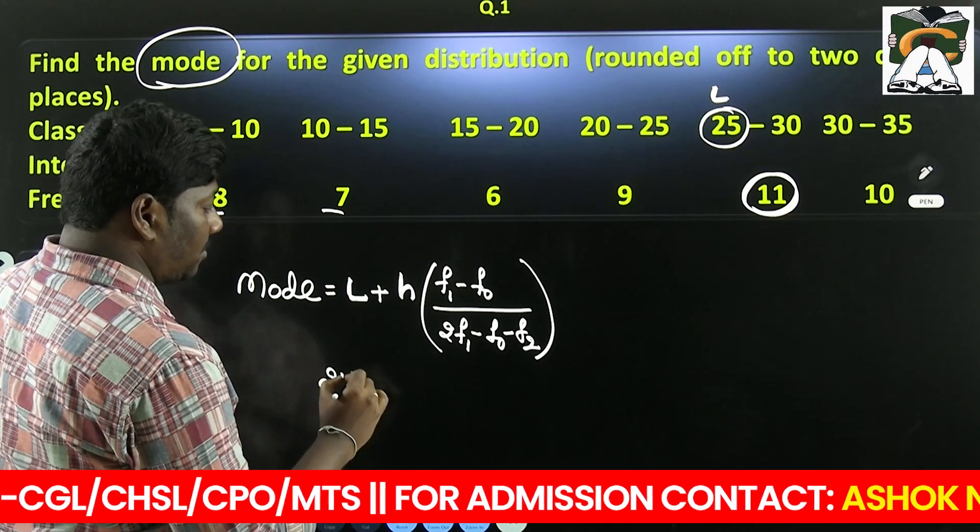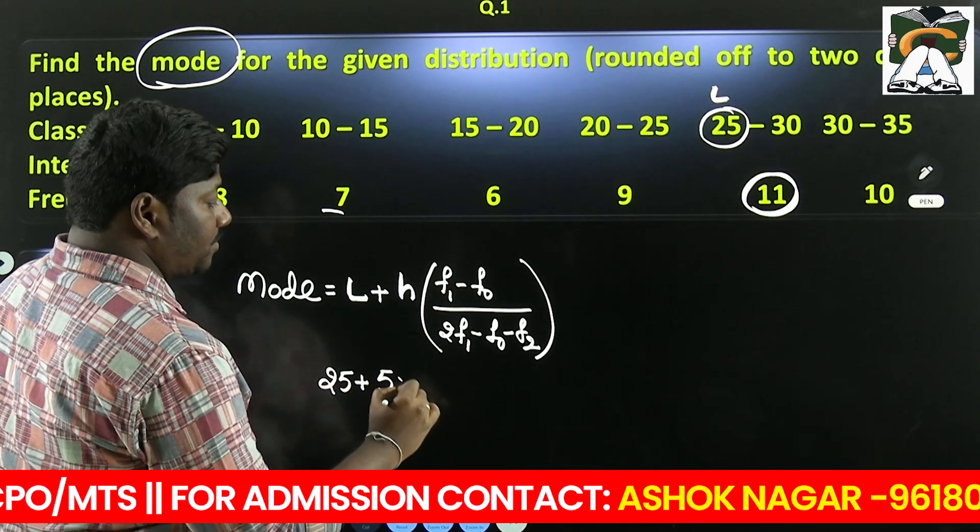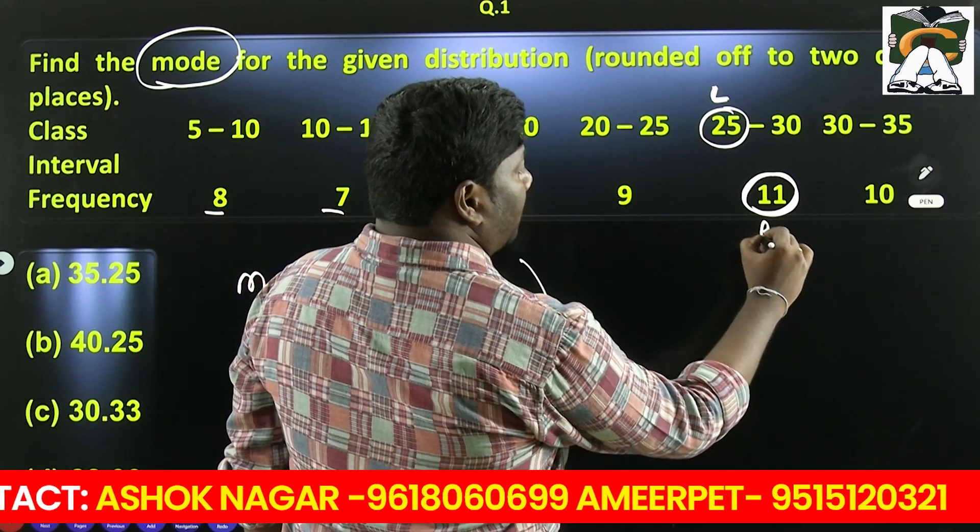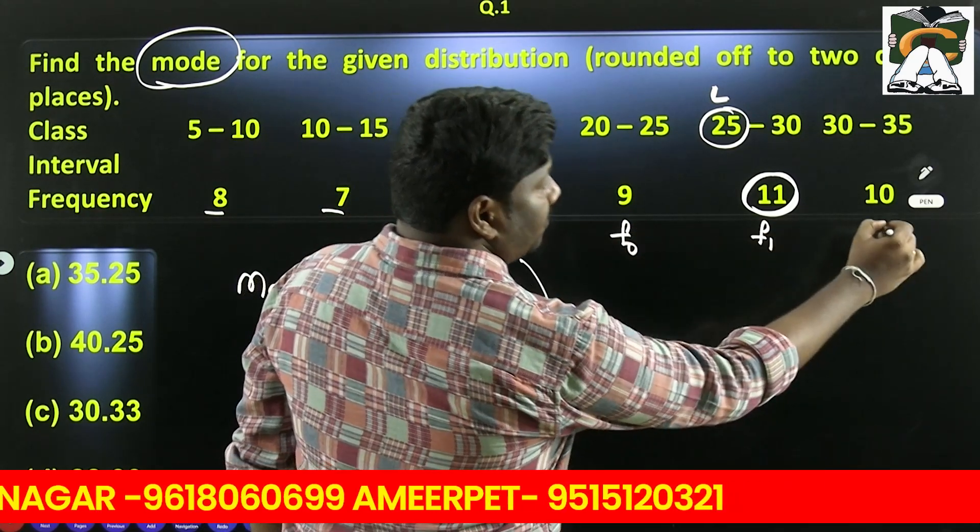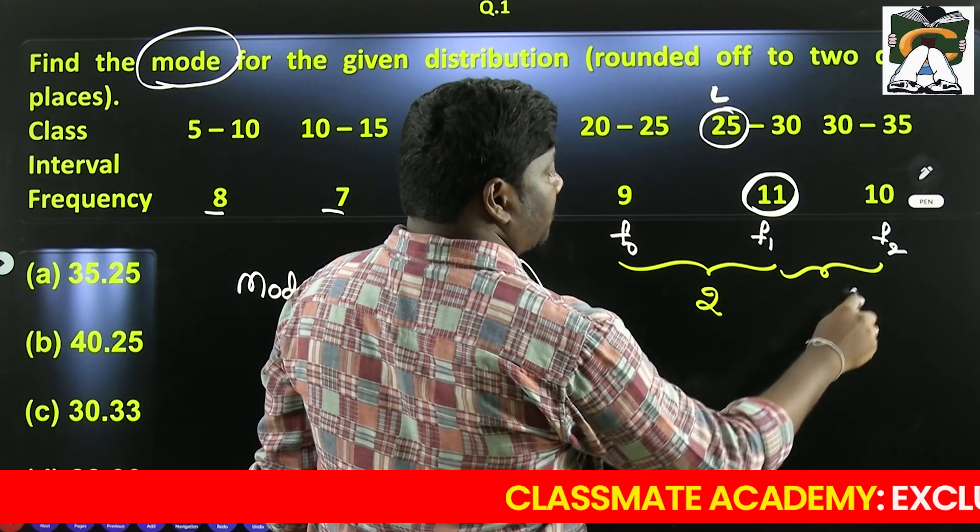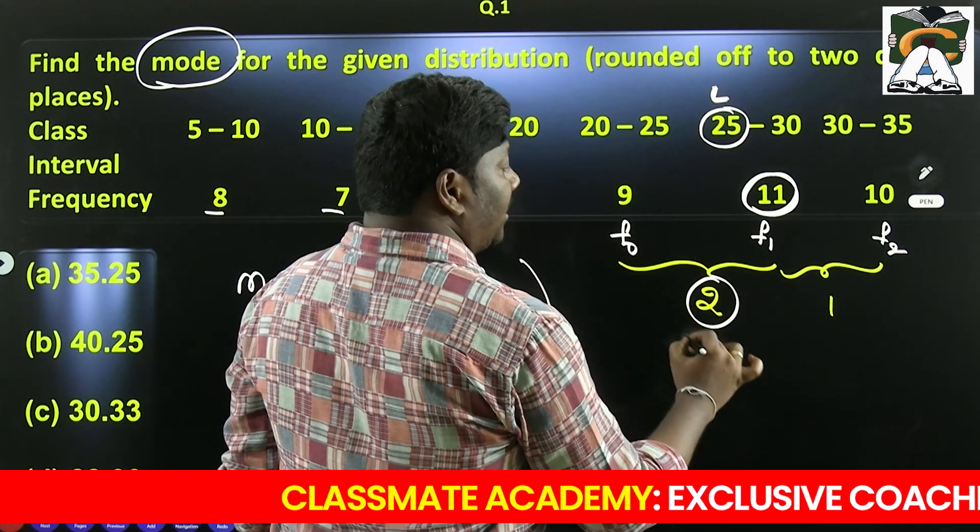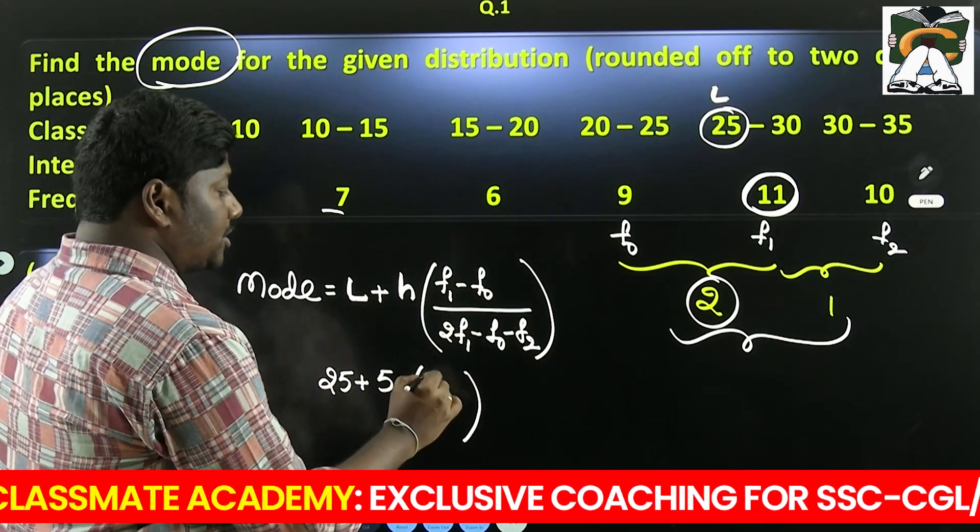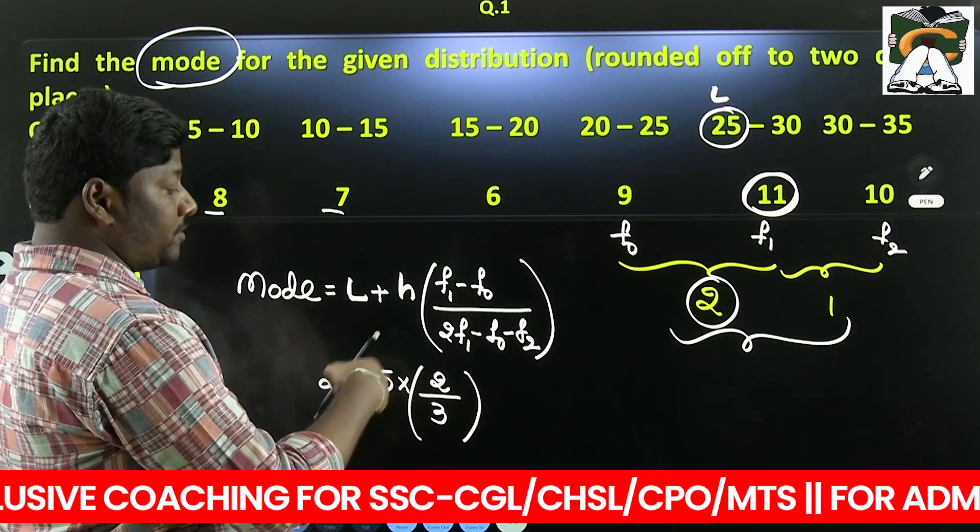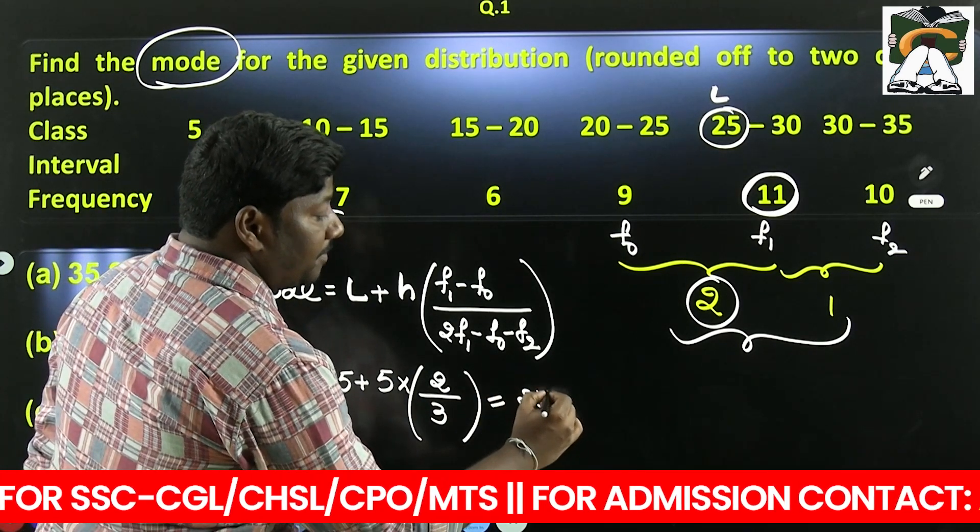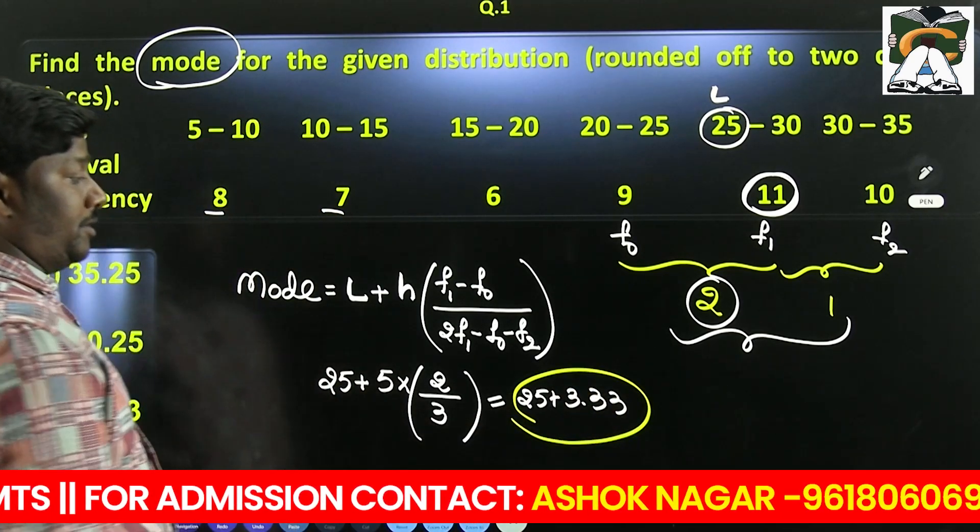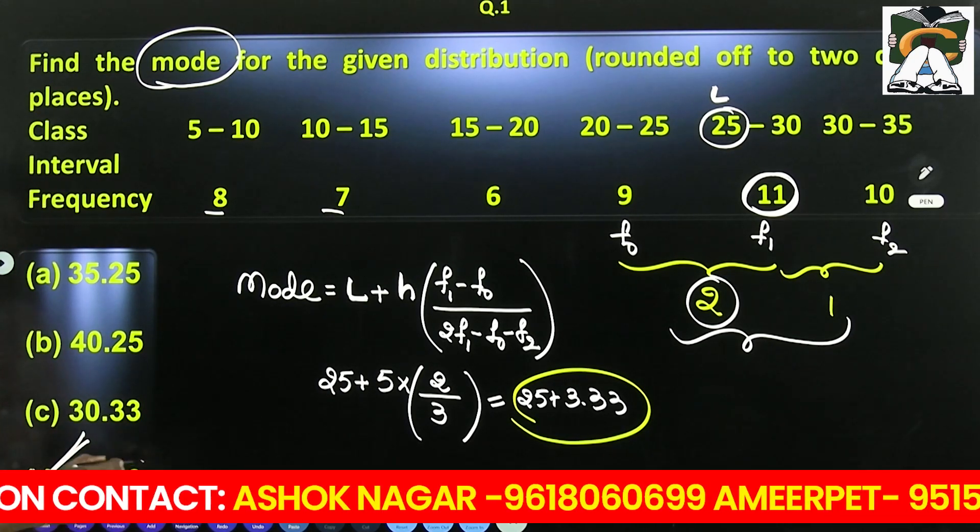So we calculate 25 plus 5 times our formula. If you remember this formula, it goes like this: f1 is 11, f0 is the frequency before it, and f2 is the frequency after it. The difference between f1 and f0 is 2, and the difference between f1 and f2 is 1. So in the formula, the numerator is 2, and the denominator is 2 plus 1 equals 3. This gives us 10 by 3. Therefore, 25 plus 10 by 3 equals 25 plus 3.33, which gives us 28.33 as our answer.